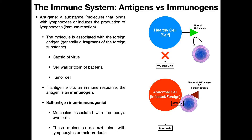Before we get into that, let's have an understanding of antigens and immunogens. Sometimes these terms are used interchangeably, but they're technically not interchangeable. An antigen is a substance or a molecule — normally a protein or a small peptide — that binds with lymphocytes or induces the production of lymphocytes, meaning an immune reaction. An antigen is just a protein that's able to interact and bind with a lymphocyte, but that does not necessarily mean it will cause an immune reaction. Some antigens lymphocytes will bind with, and nothing happens. Those are generally our own self-antigens.